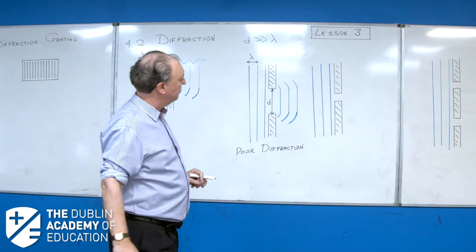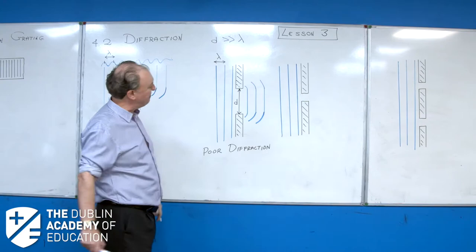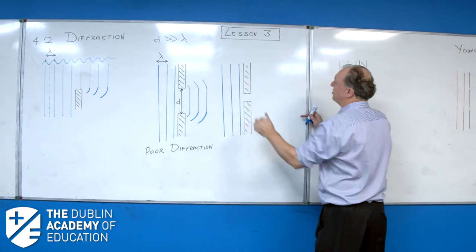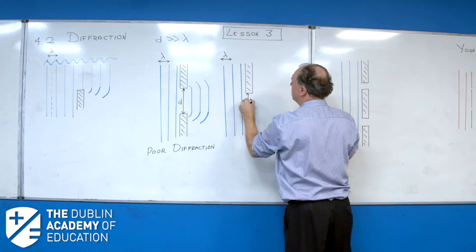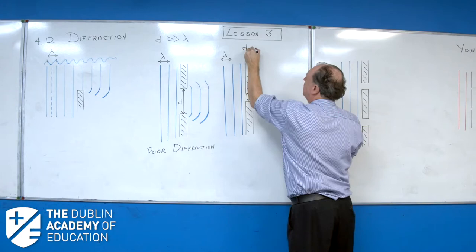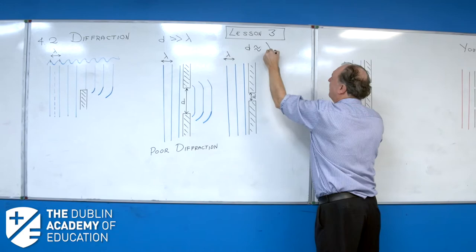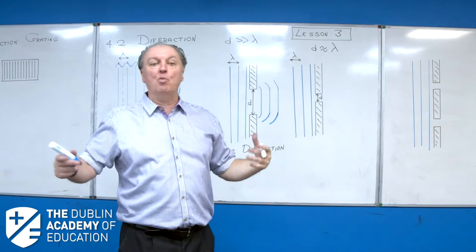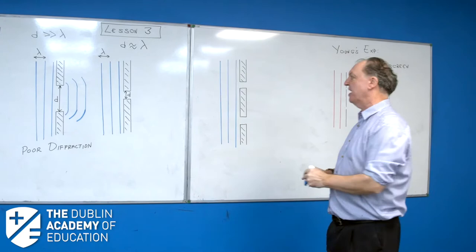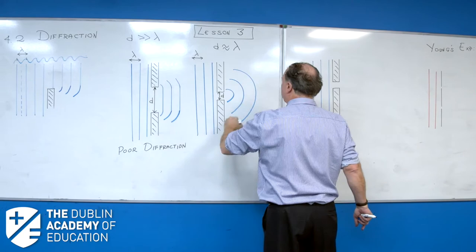They found this by experiment. What happens if they squeeze the gap? They made the gap so that it is approximately the same size as the wavelength — D ≈ λ. By experiment they found you get wonderful diffraction — lovely spreading out. The waves will spread out in lovely circular waves. That's what we call really good diffraction.